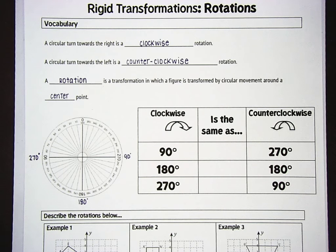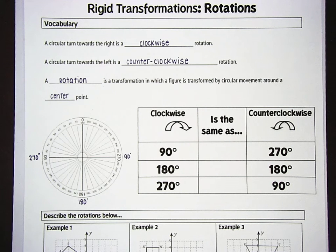A rotation is a rigid transformation in which a figure is transformed by a circular movement around a center point. For our purposes in this class, we're going to use the origin or zero zero on a grid as our center point, but you should know that you can rotate around any center point.